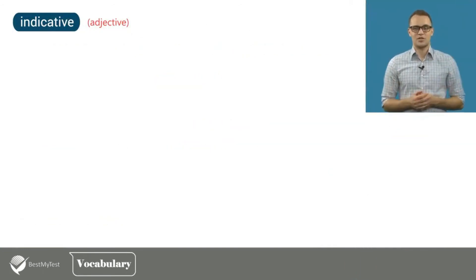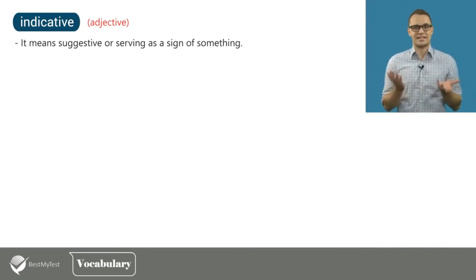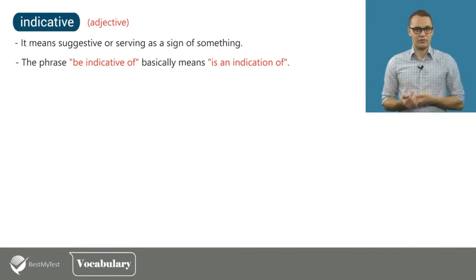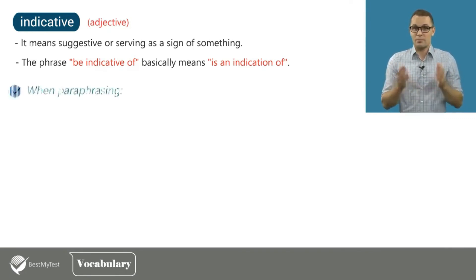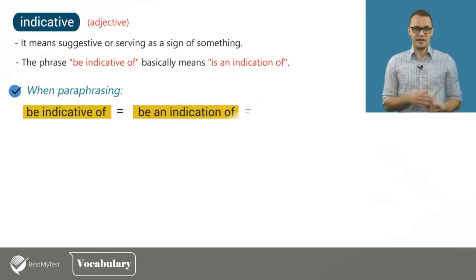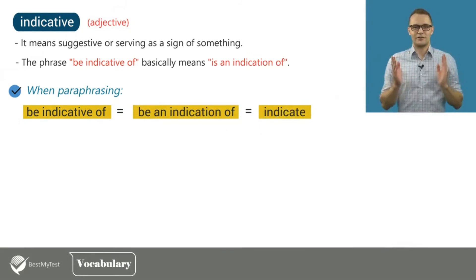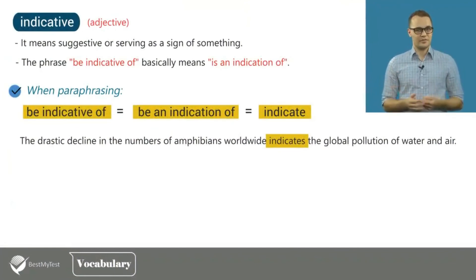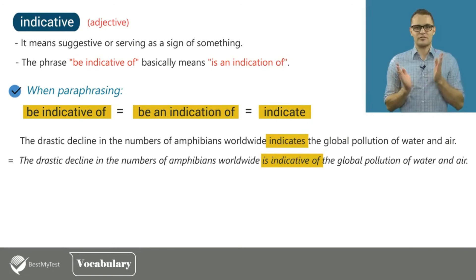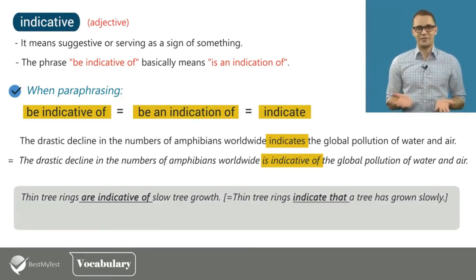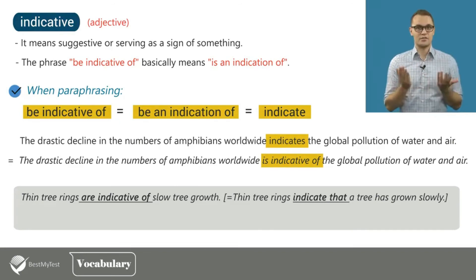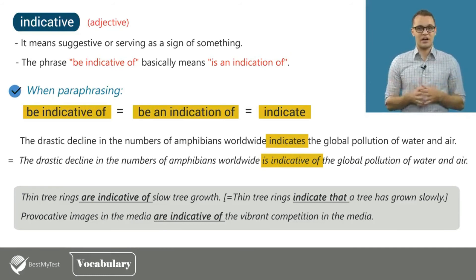Let's look at the final word today: indicative. Indicative means suggestive or serving as a sign of something. The phrase 'be indicative of' basically means 'is an indication of.' Therefore, when paraphrasing, you can use 'be indicative of' instead of indicate. For example, 'the drastic decline in the numbers of amphibians worldwide indicates the global pollution of water and air' can be paraphrased to 'is indicative of the global pollution of water and air.' More examples: thin tree rings are indicative of slow tree growth. Provocative images in the media are indicative of the vibrant competition in the media.